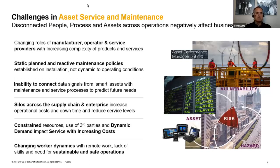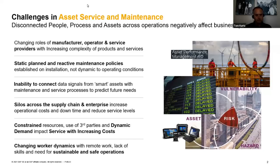From an APM perspective, we have a static nature today in how we develop maintenance policies. What companies want to be able to do is develop asset strategies upfront, segment assets differently, do risk and criticality analysis, and understand how to treat different batches of assets — but dynamically integrate that downstream with maintenance policies and processes. You also want to connect devices to capture information smartly from those assets, not just within asset and maintenance systems, but across the organization. That's another challenge: we have silos today across the larger enterprise.